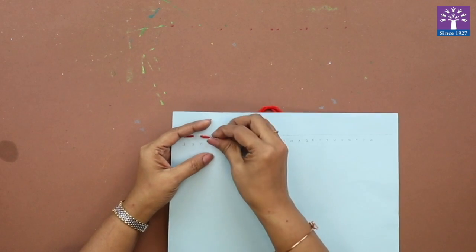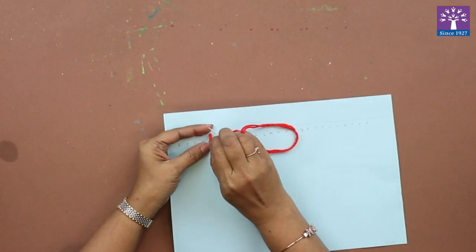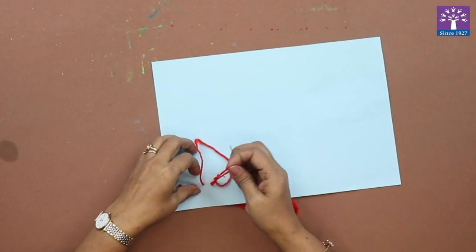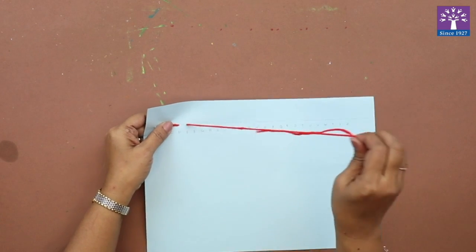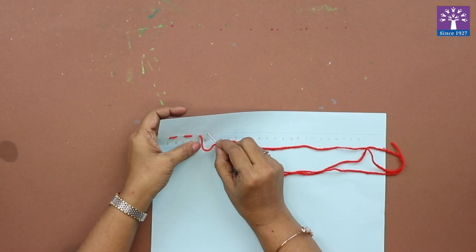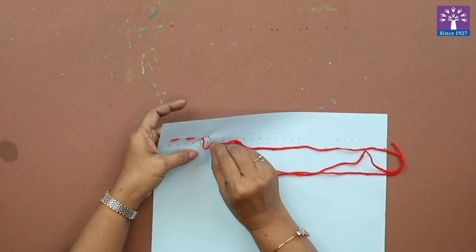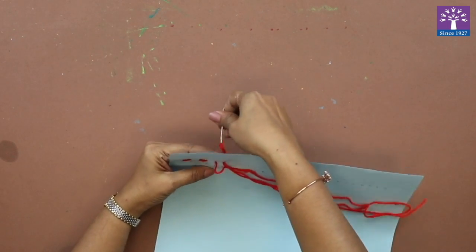Once your thread goes behind, that's the place where you will bring the thread up from behind. So every point or every alphabet, our needle is going up and down.